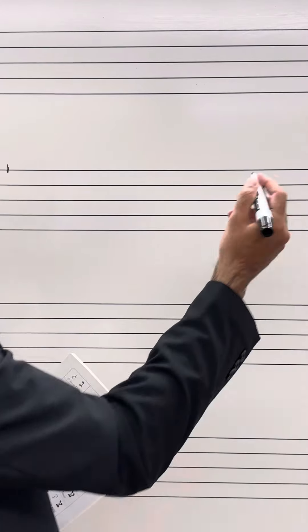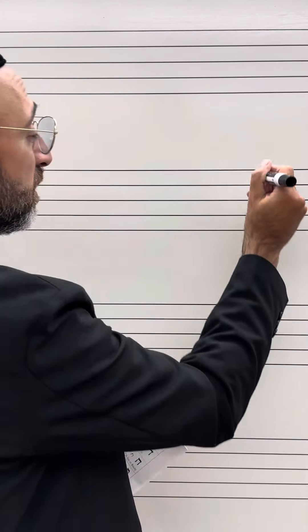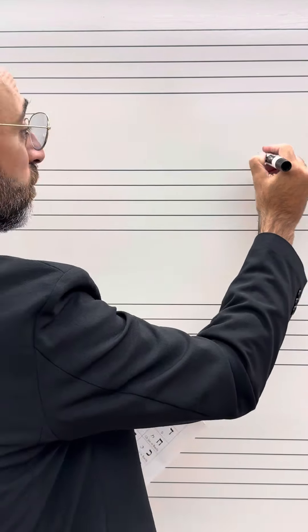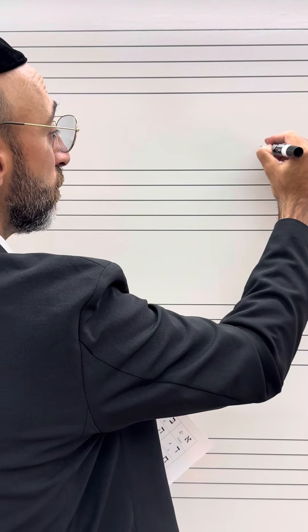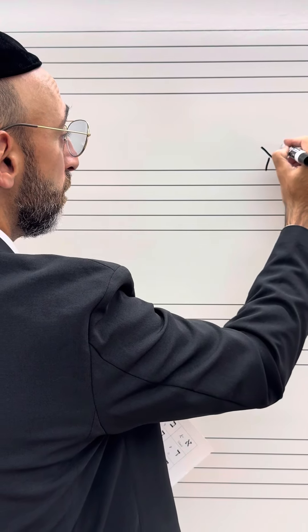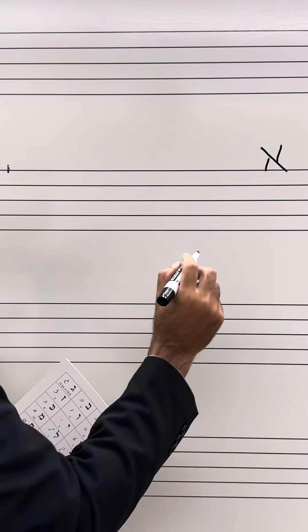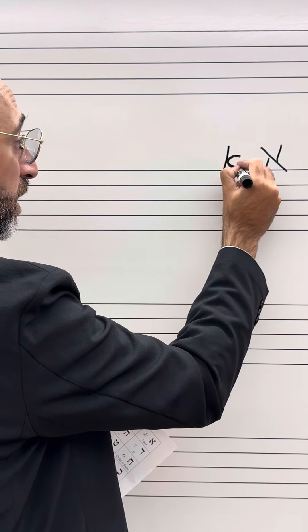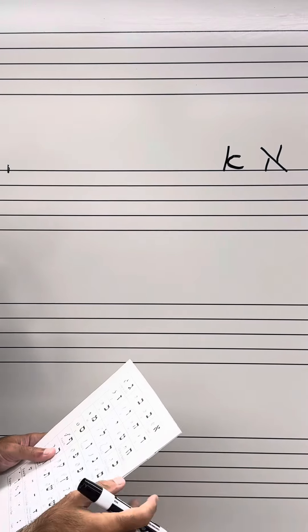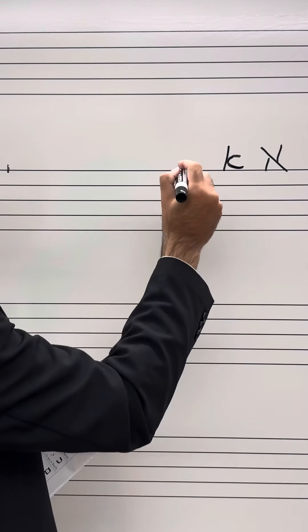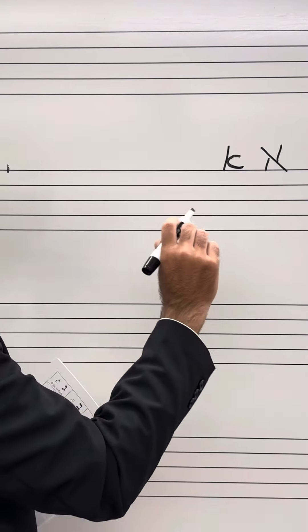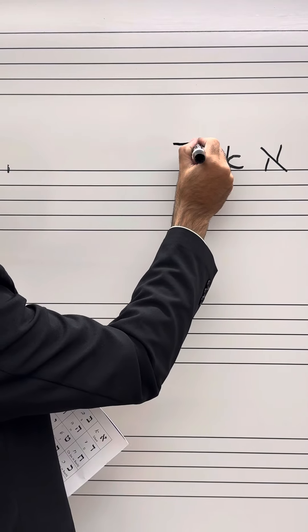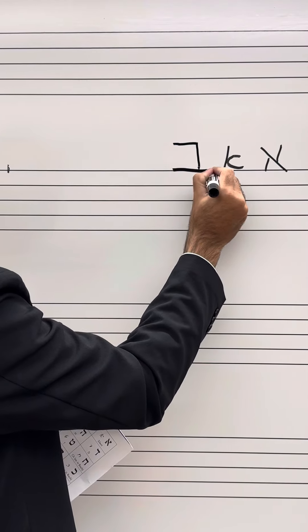The first letter of the Hebrew alphabet is the letter Aleph, which in block form is drawn like this. In cursive, it's going to appear as a straight line with a distinctive shape that lands on the line — that is the Aleph.